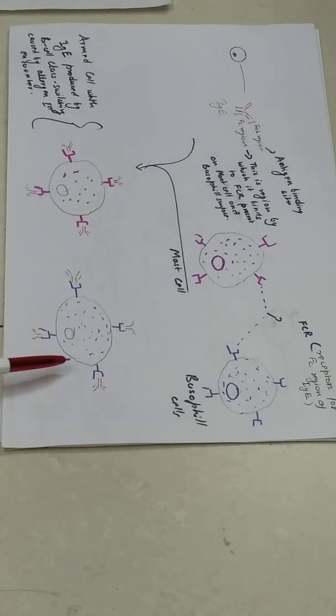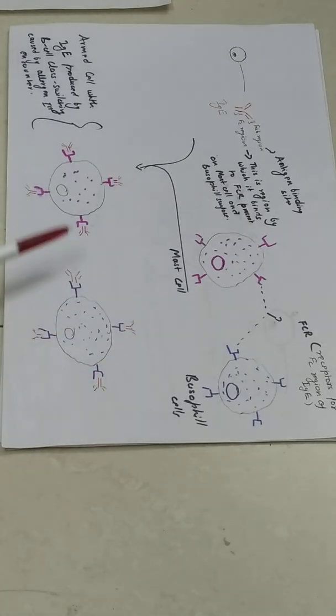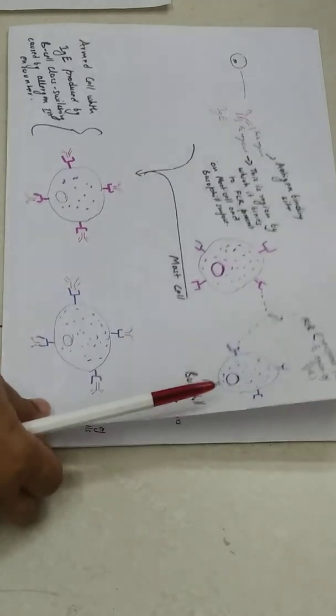Now these cells are fully primed. They have receptors bound with IgE. And that IgE is the one which can recognize if that allergen comes second time. It has specificity against that particular allergen. So if the second time these allergen come, these cells can function. So these are like armed cells. These are armed cells bound by IgE. Now this is the end of sensitization. Now the body is fully primed for that particular antigen.